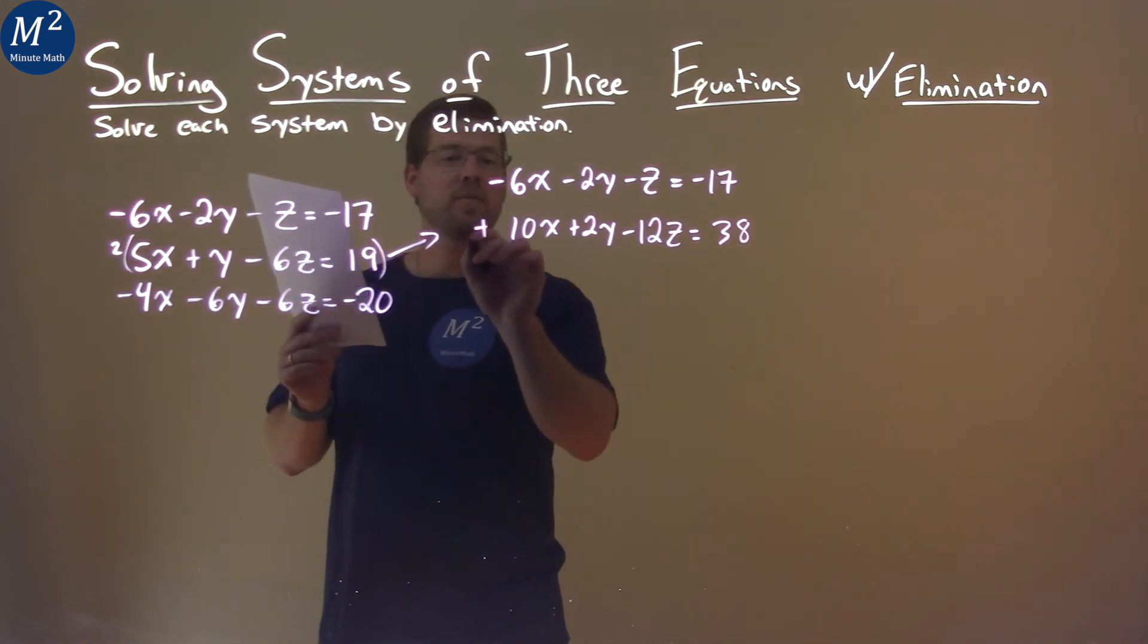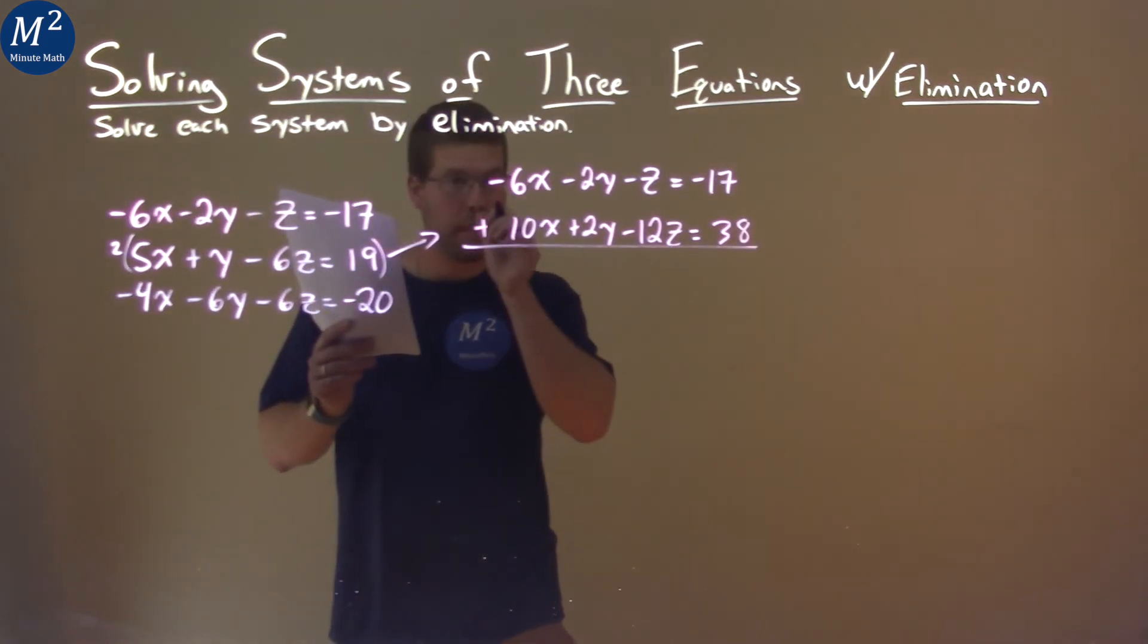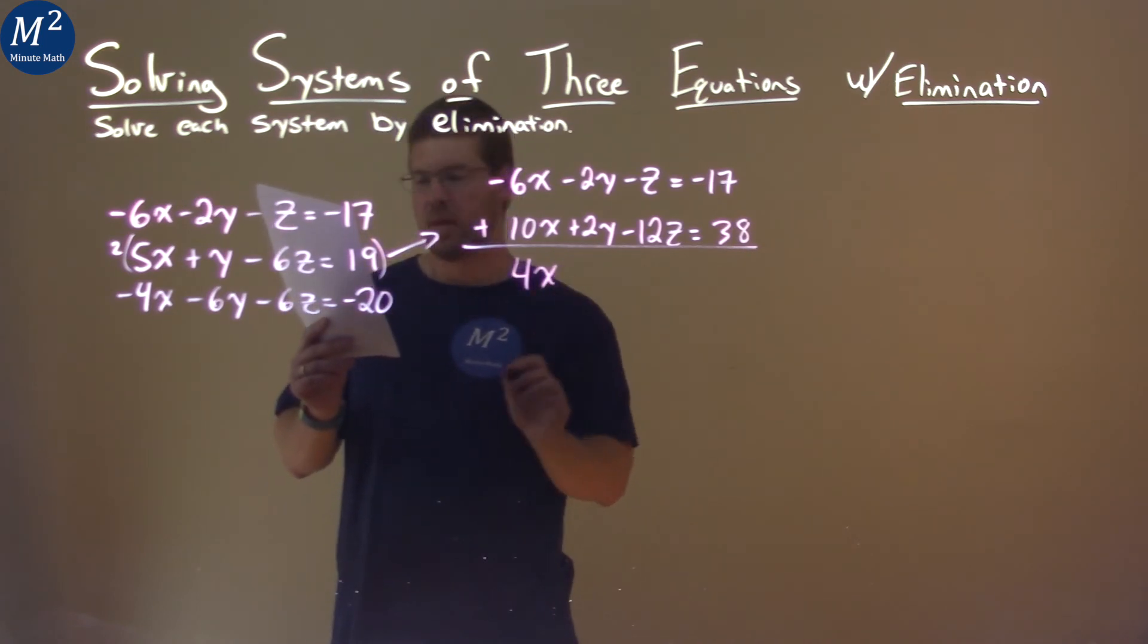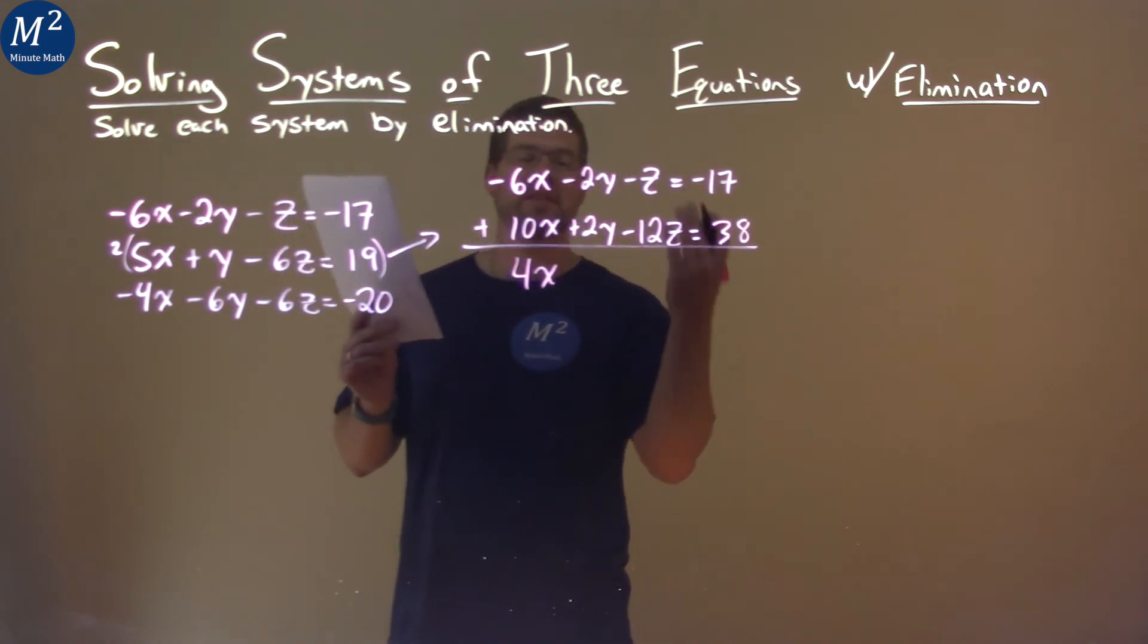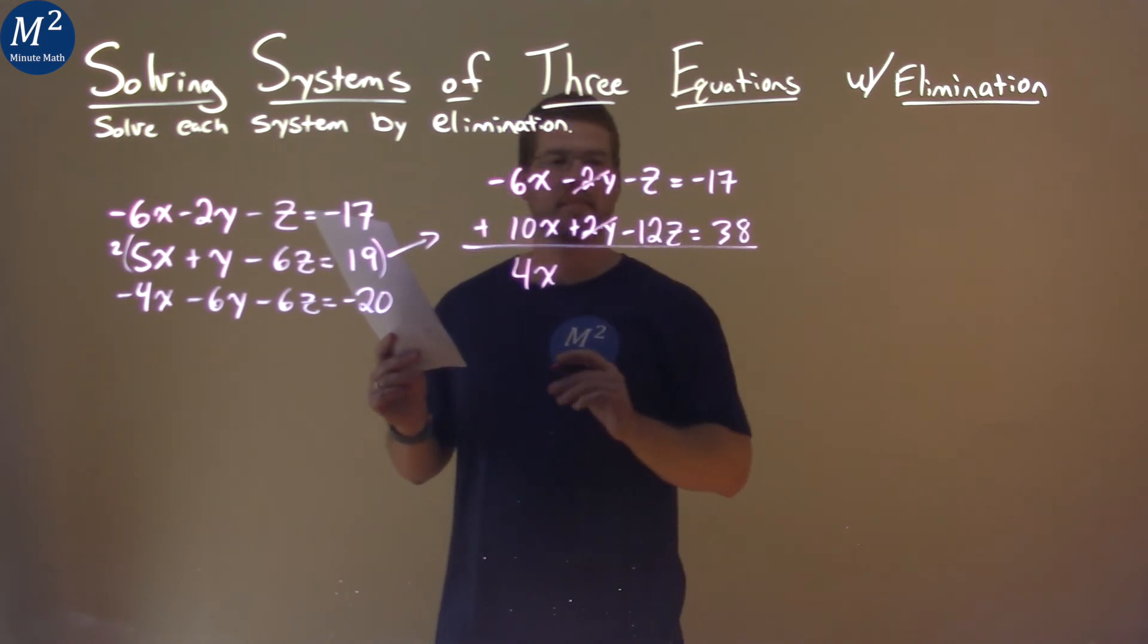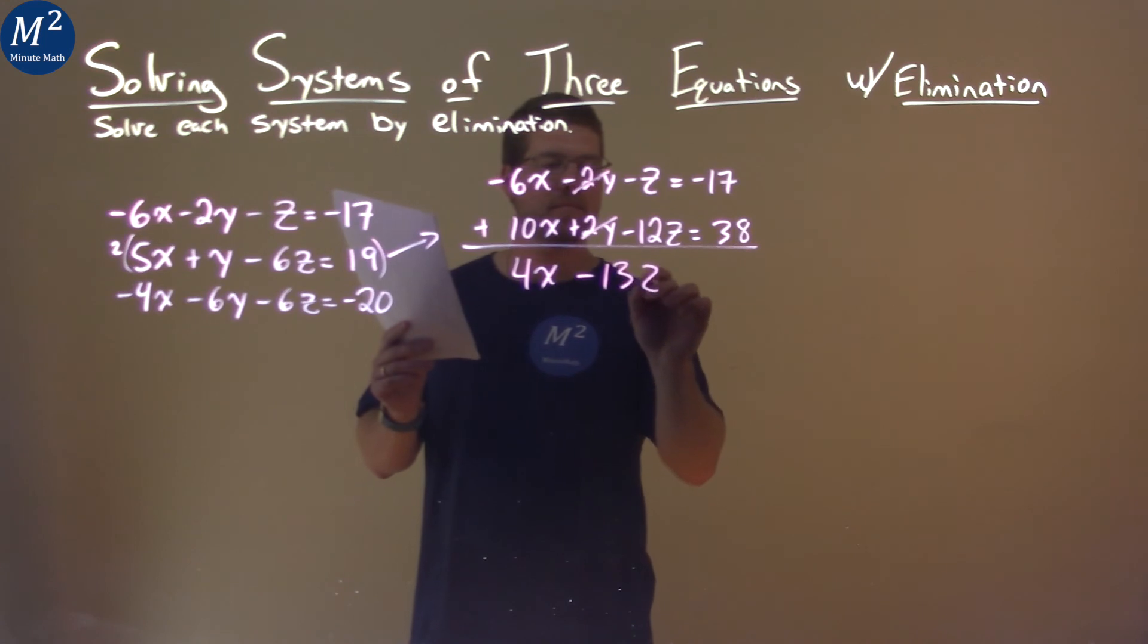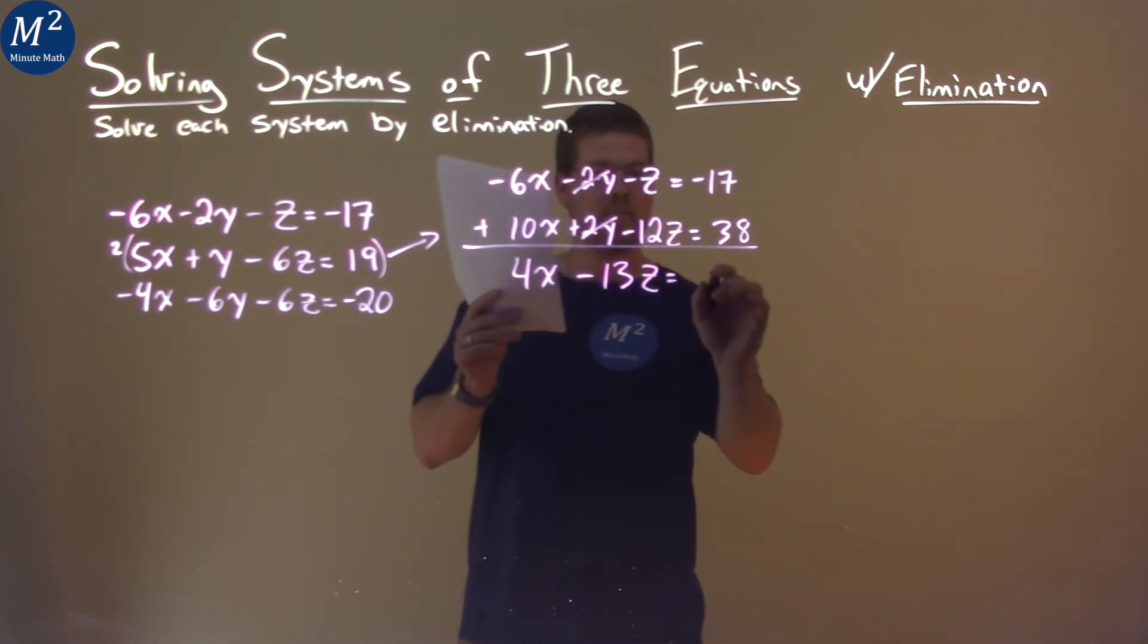I now can add these two equations and see what happens. Negative 6x plus 10x is 4x. Negative 2y plus 2y eliminates, that's just 0y. Negative z plus negative 12z is negative 13z, and negative 17 plus 38 is positive 21.